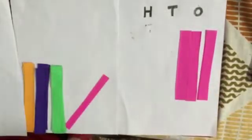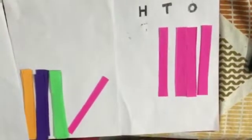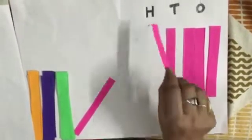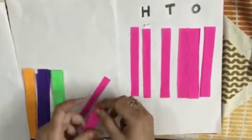And for 1 ten, 1 strip in the tens column, and for 200, 2 strips in the hundreds column. So this is 213.